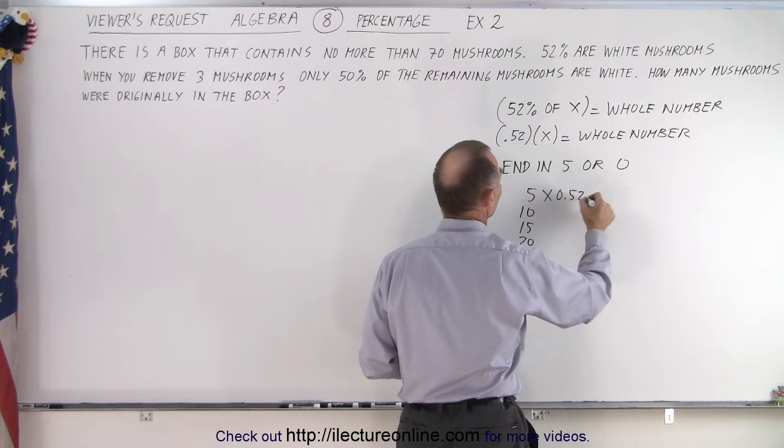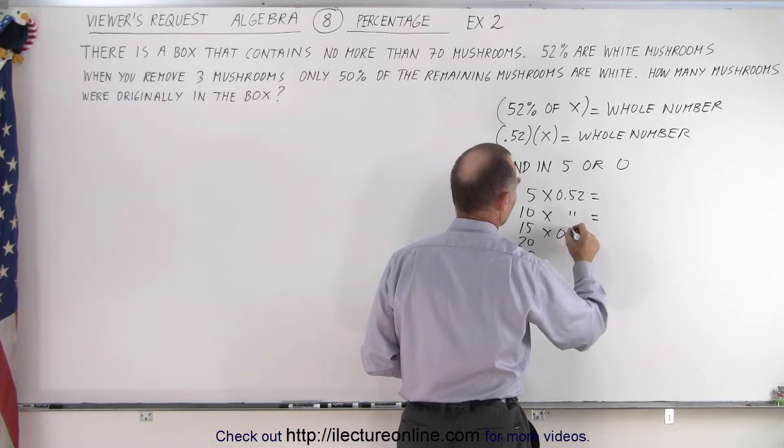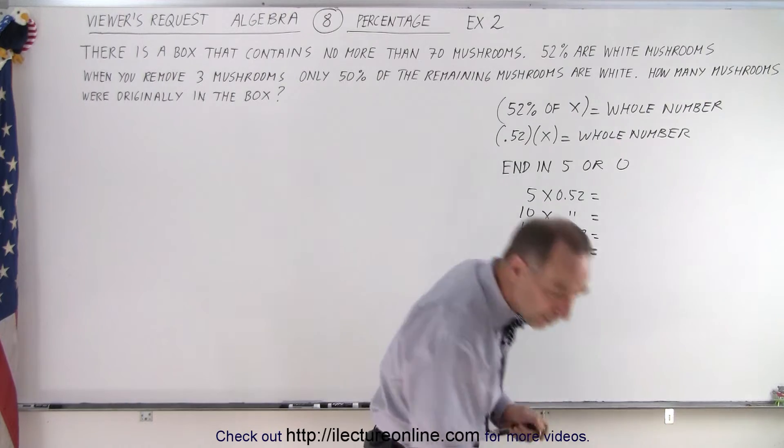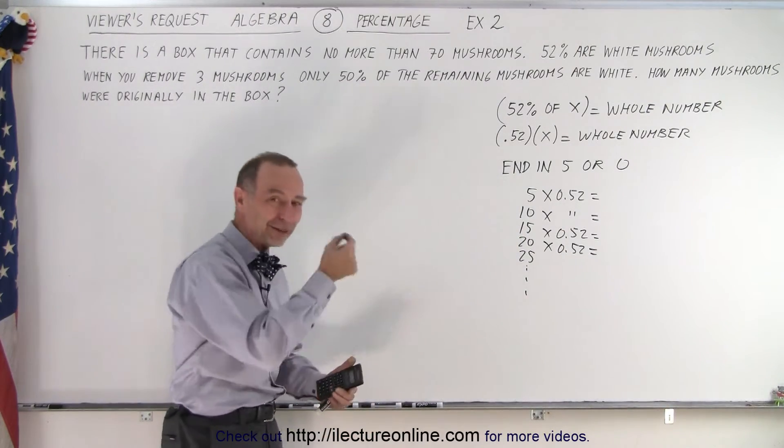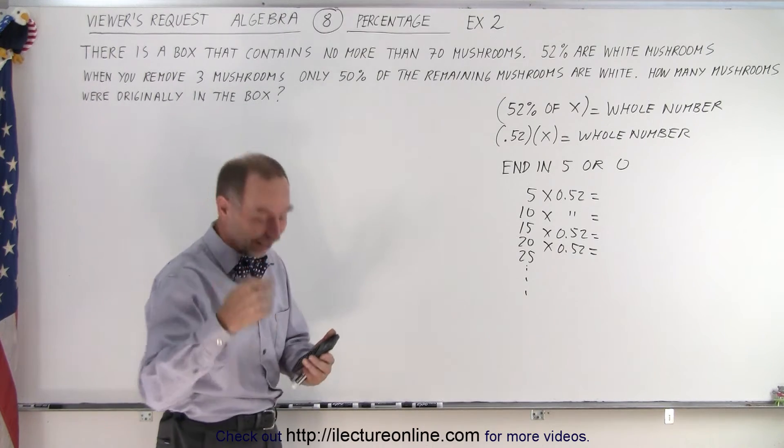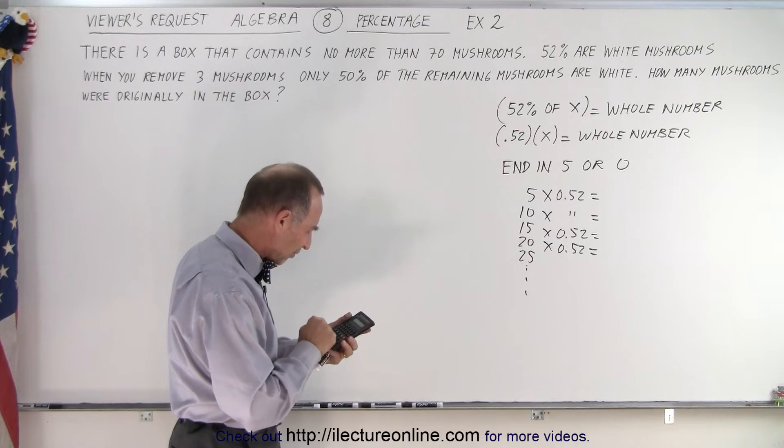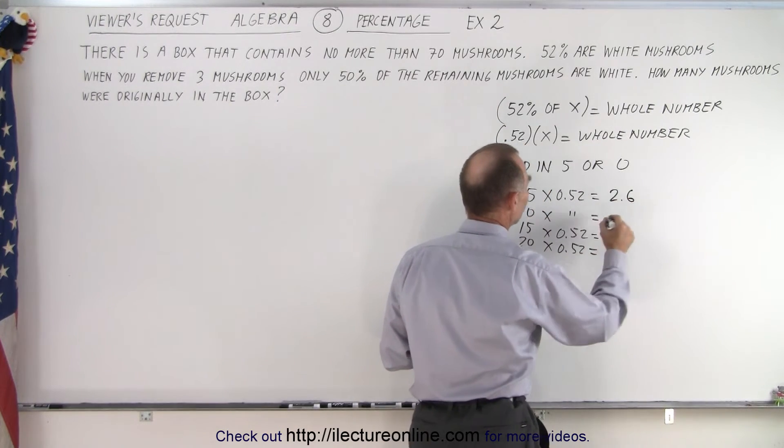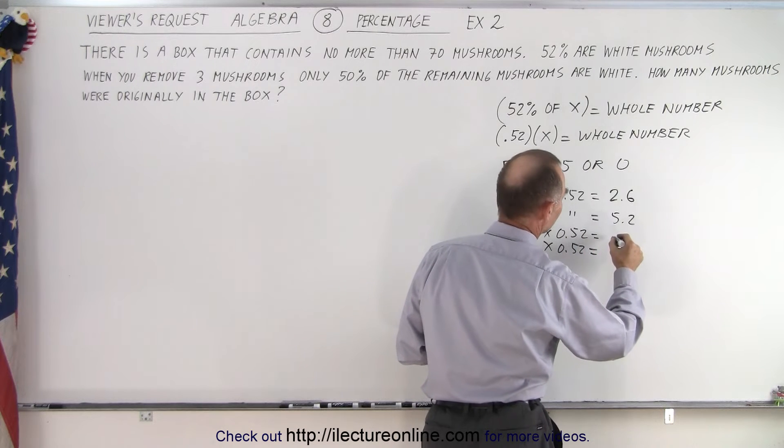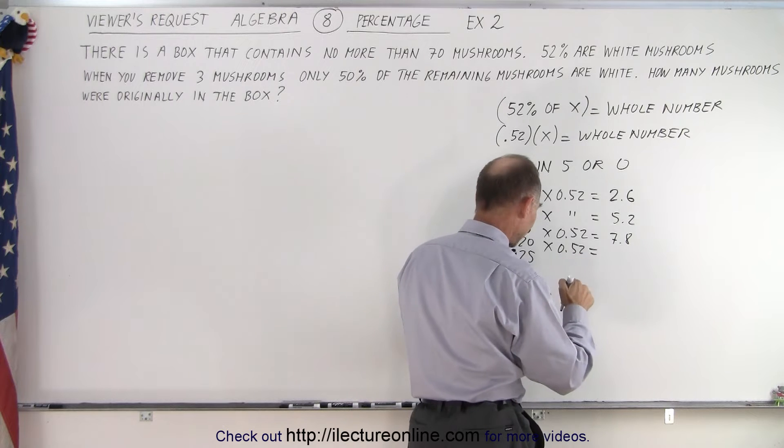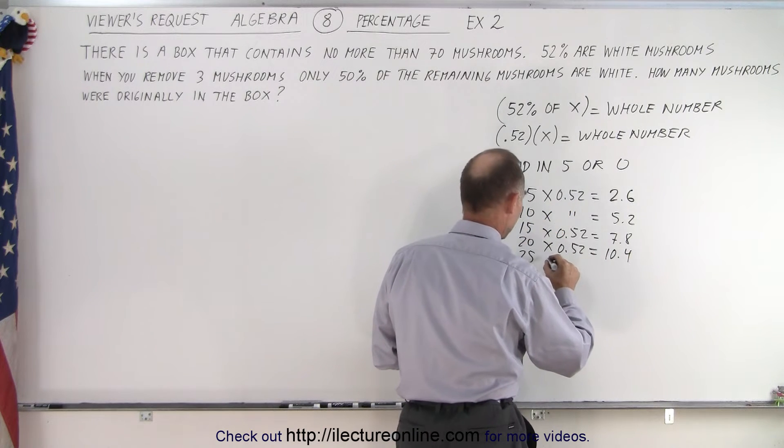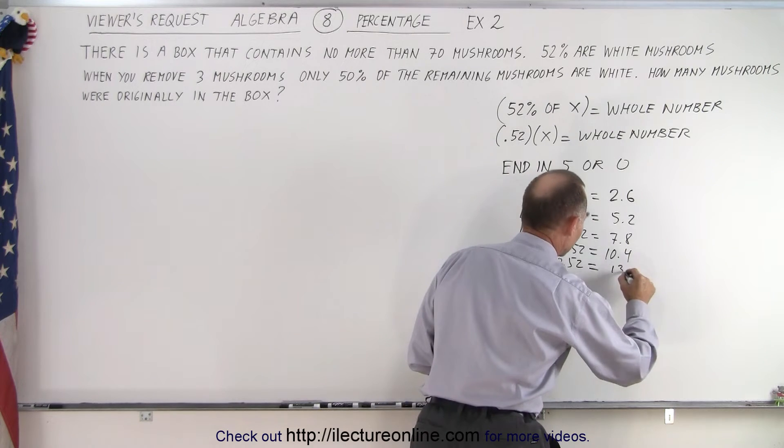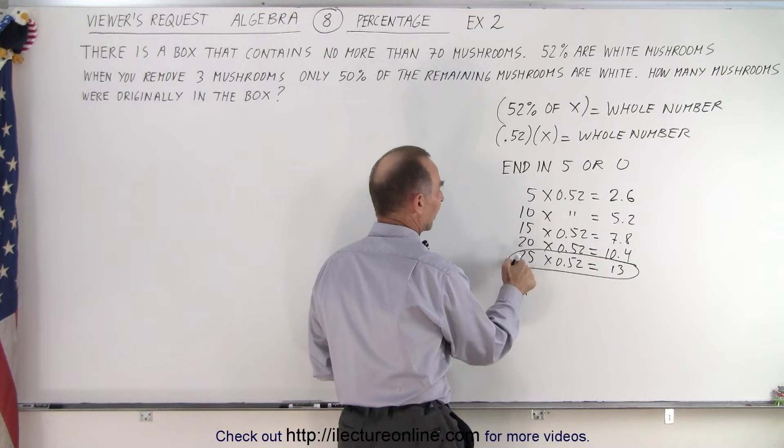So 5 times 0.52, and we'll just keep doing that. I just swallowed a little bug. A little extra protein never hurts. Okay, so 5 times 0.52, and right away you realize that doesn't work, that gives us 2.6. When you multiply that times 10 you get 5.2, multiply times 15 you get 7.8, multiply times 20 you get 10.4, and finally 25 times 0.52, I think that works. Sure enough, that gives me 13.